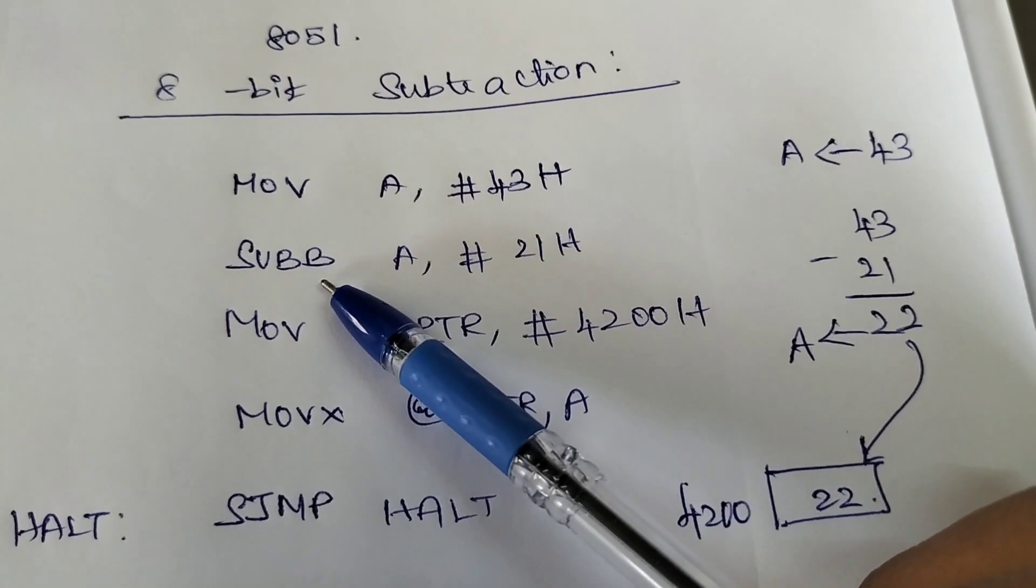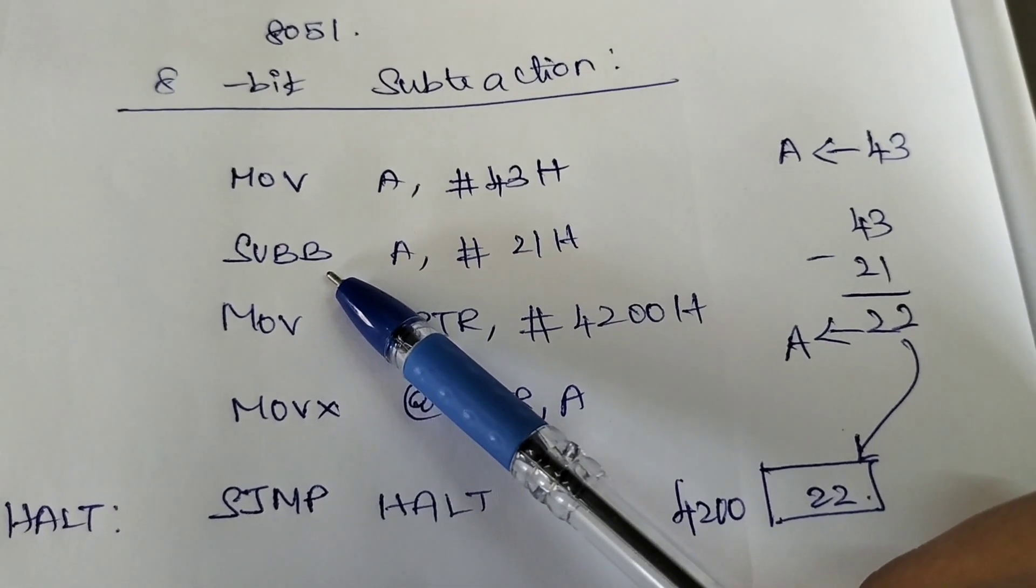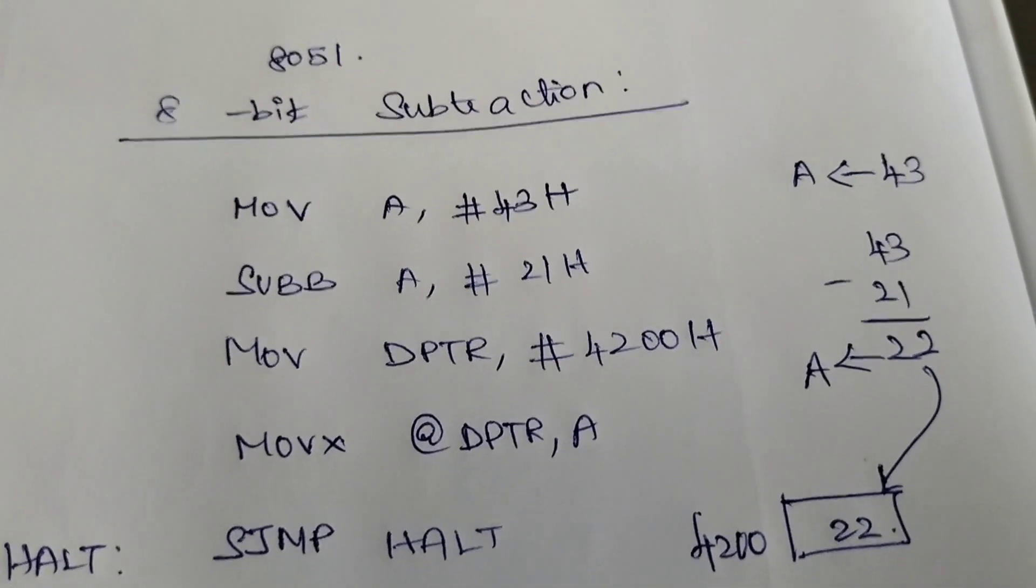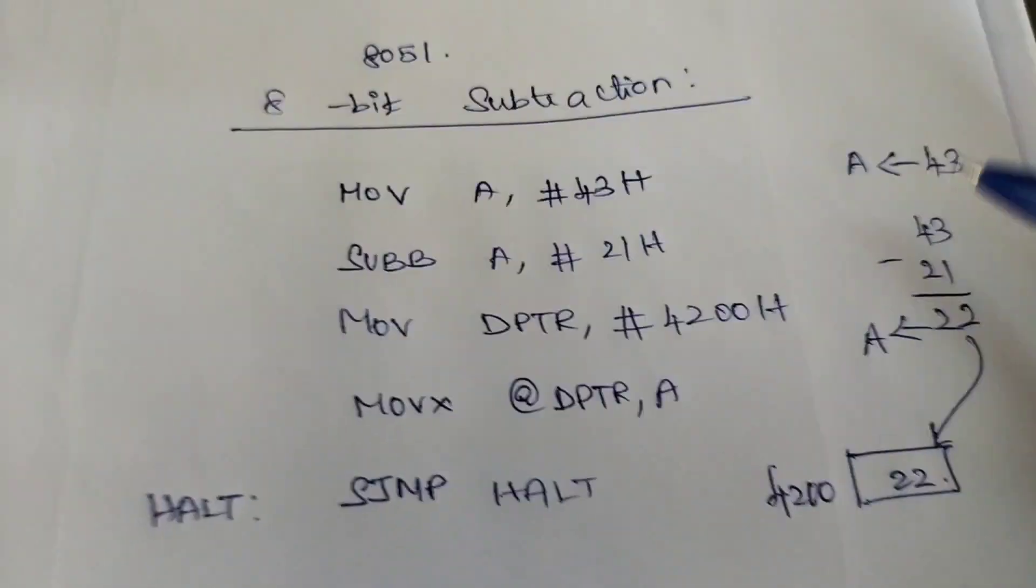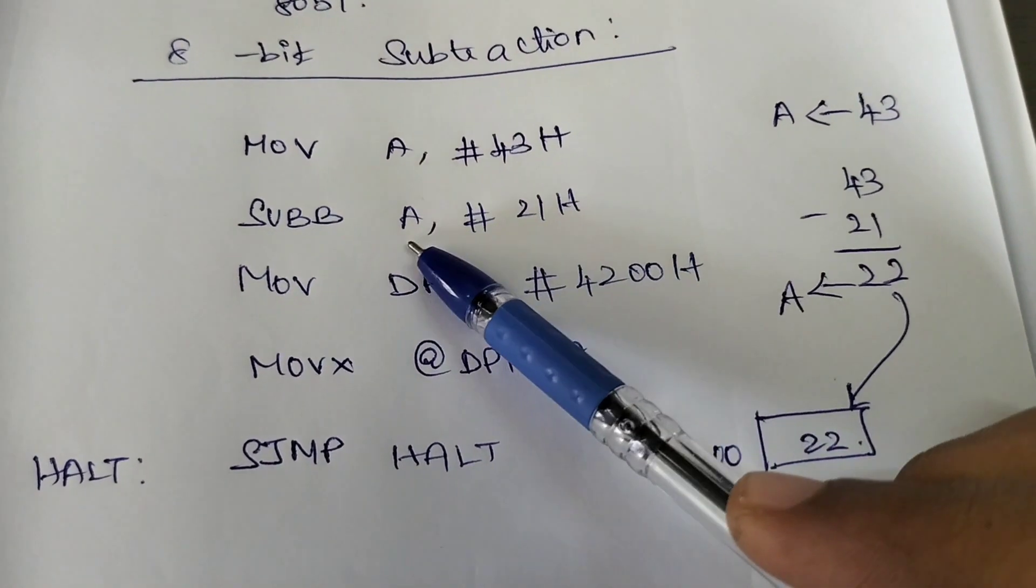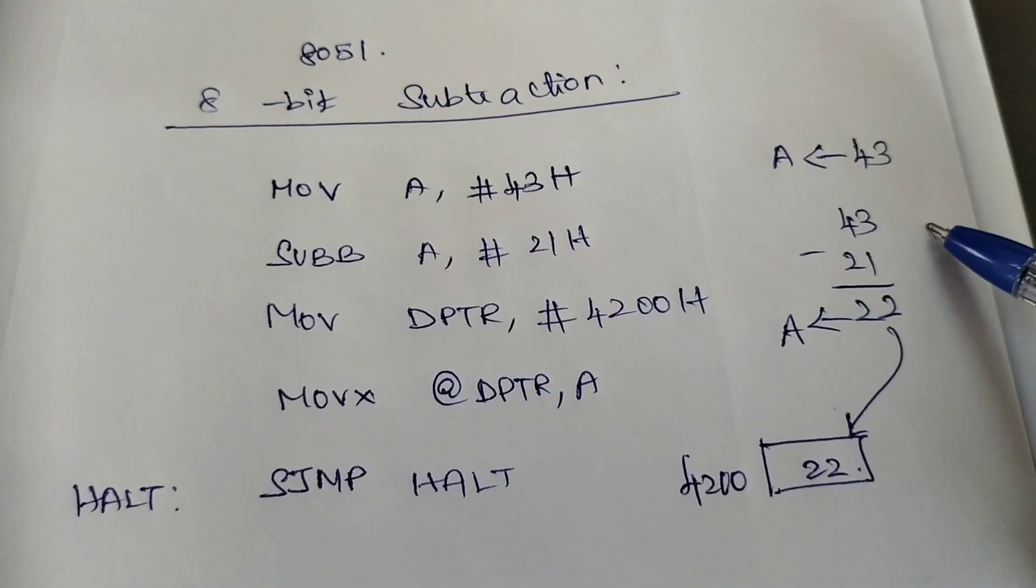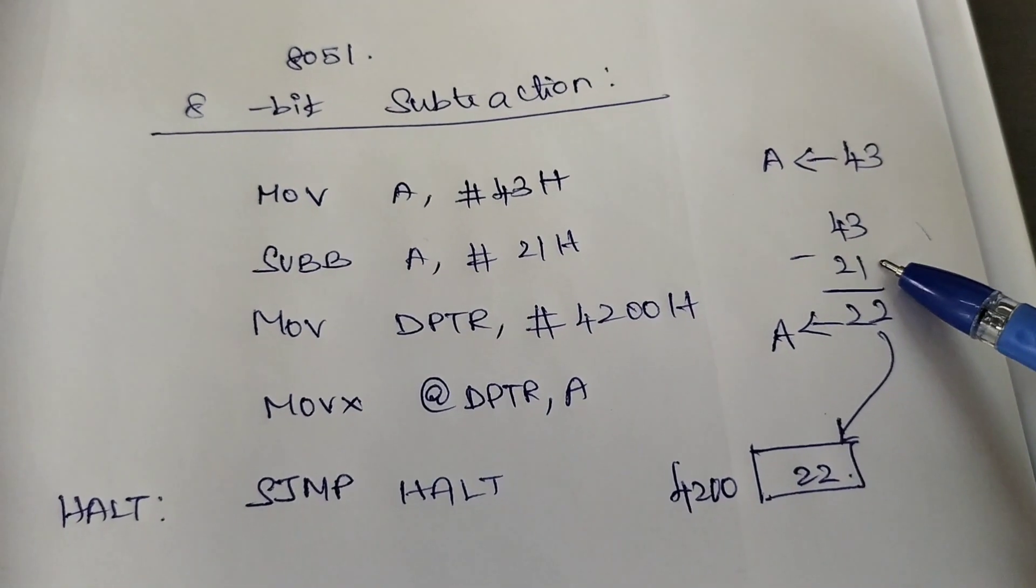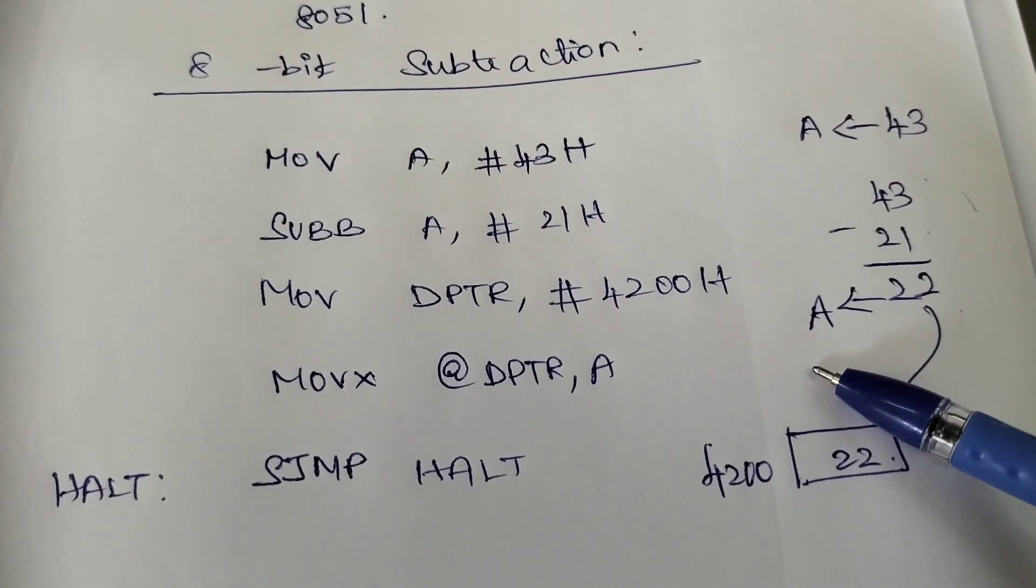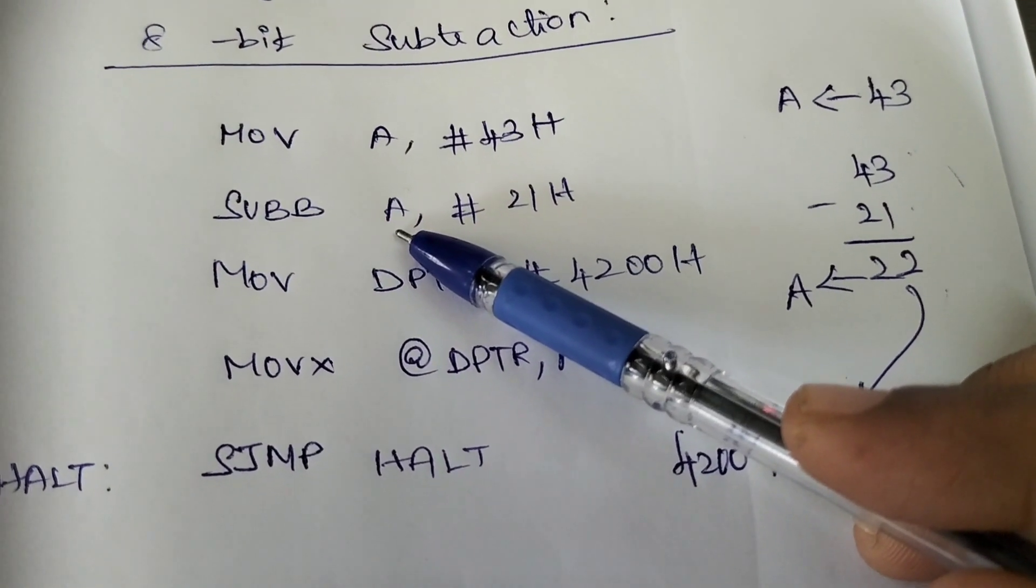If any carry or borrow is available, that also gets subtracted. By default, whenever we press reset in the 8051 kit, our carry becomes 0, so no need to bother about the borrow or carry. The second data we are subtracting from the first data. The operation will take place like this: 21 is subtracted from 43, so we get 22.